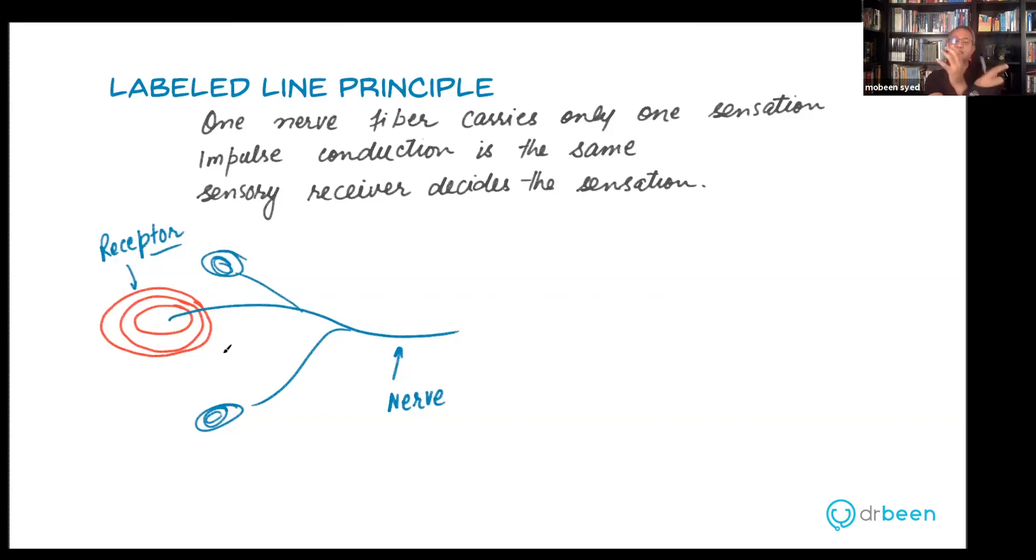One nerve would always have the same category of receptors. For example, let's say here is another nerve, and let's say the ends of this nerve are expanded discs like Merkel's discs or Ruffini's corpuscles. So let's say these are Merkel's discs. If that is the case, then all of them are Merkel's discs.